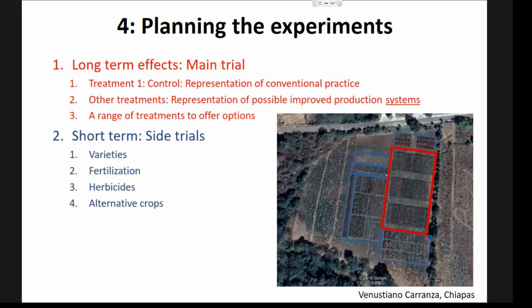We also often have short-term side trials on site, where we evaluate things that don't need long-term investigation — things like varieties, fertilization, herbicides, or alternative crops, where you get a definitive answer in one, two, or three cycles.